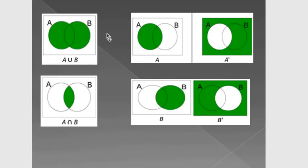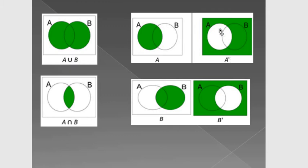Look at these figures. The first one, the green colored, means A union B. In union, I will take all the elements of the two sets. The second one means the elements of set A. The third one means the A complement — to find A complement, I will hide the elements of A and take the other elements in the universal set, which means the mother set. And A intersection B means the common elements between A and B — the elements which belong to A and B at the same time.